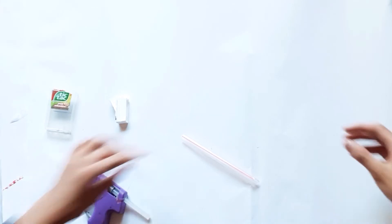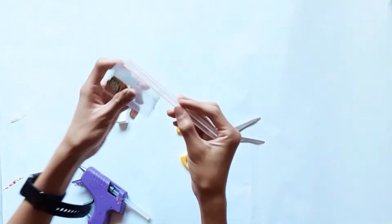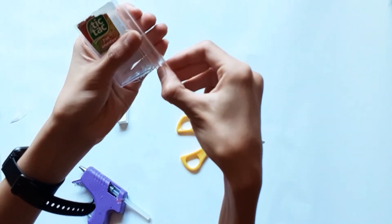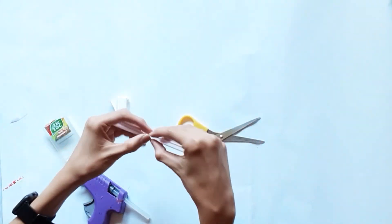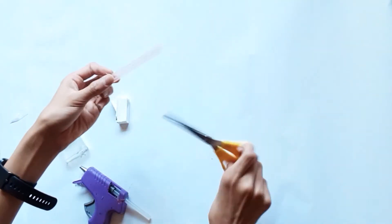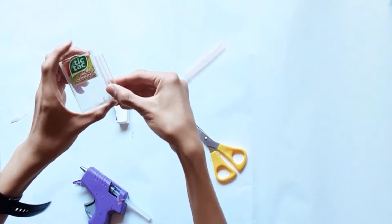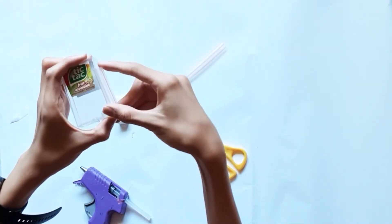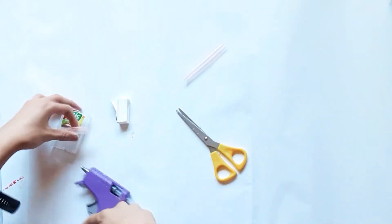Alright. Now, we are going to take the straw, and we're going to cut the straw so that it fits just like this. It should be basically a little bit less than the length of the Tic-Tac container. So we're going to put it like this. That is perfect. So it's almost the length of the Tic-Tac container, but it shouldn't be exactly the length.